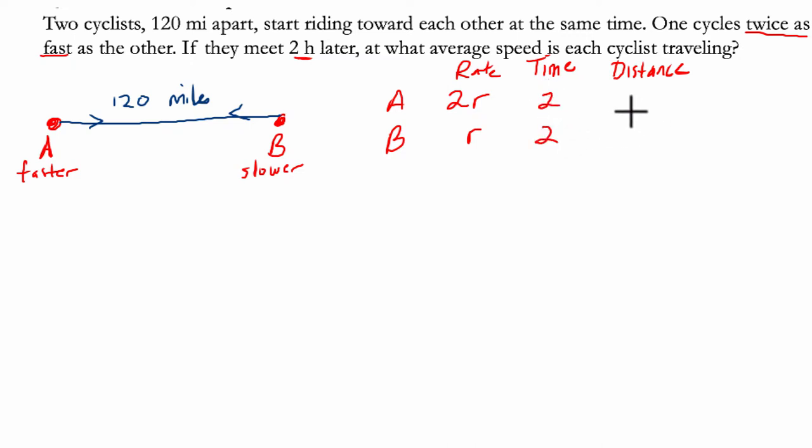So how far are they going? Well, rate times time equals distance. So 2R times two is the distance of the faster cyclist, 4R, and R times two is the distance of the slower bike rider. All right. So now what?